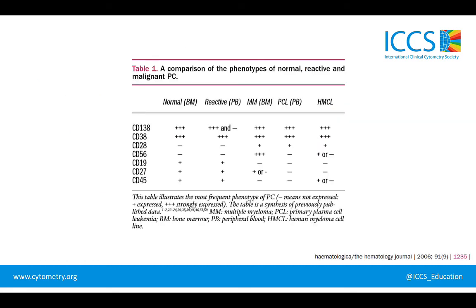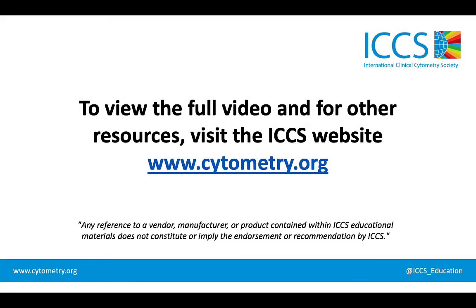This is an excellent table which summarizes a lot of what we've just mentioned. Normal bone marrow plasma cells and reactive plasma cells should be very bright for CD138 and CD38. In fact, even malignant plasma cells should be bright for those markers, which makes them easy to gate on. CD28 and CD56 should be negative in normal and reactive plasma cells; their gain is associated with aberrancies. In contrast, CD19, CD27, and even CD45 should be positive to some extent in normal plasma cells, and their loss is associated with aberrancy.